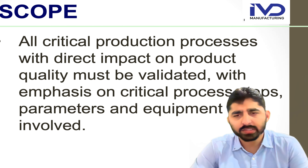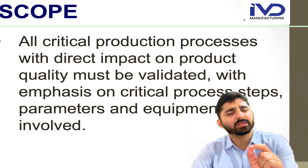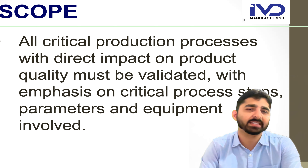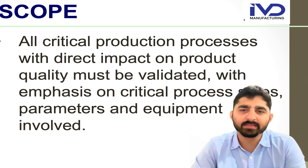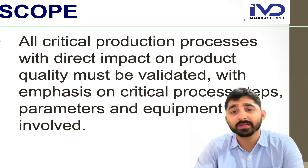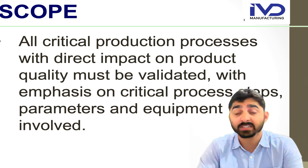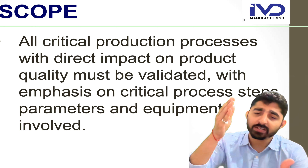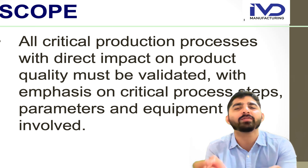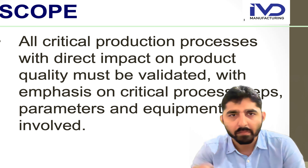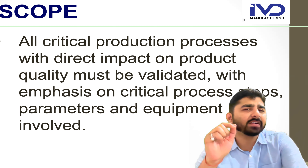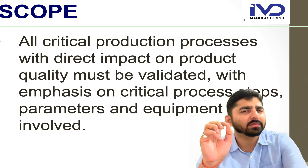Regarding scope: all critical production processes that have a direct impact on product quality must be validated, with emphasis on critical process steps, parameters, equipment, and materials involved. This is why process validation is important — you must be aware that you have set up the correct processes. For example, if I have a strip cutting machine cutting an anchor sheet, I need to validate which method is best. Process validation should always be conducted on two types of products: new products and existing products.